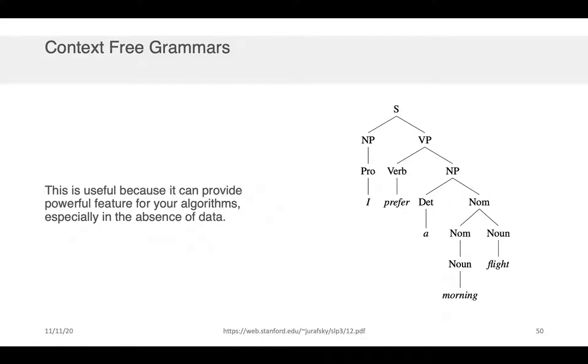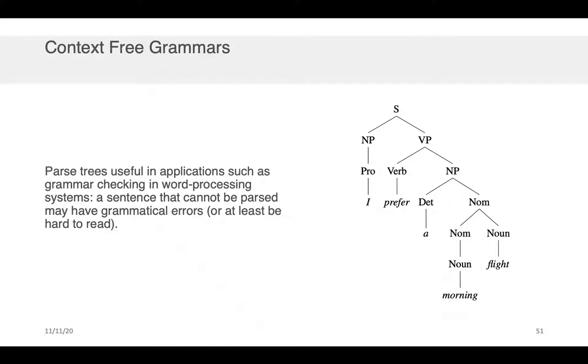But in general this is useful because it provides features for algorithms especially when you have an absence of data. Now parse trees are also useful in applications such as grammatical checking in word processing systems. Actually the way that Microsoft Word and many other packages that indicate you have a grammar error flag a sentence as problematic is they basically parse it according to a context free grammar similar to what I showed you before